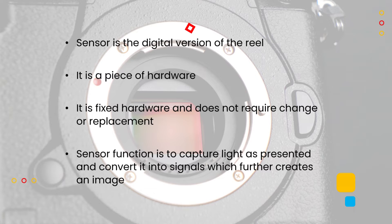It has multiple pixel-type sensors and their job is to capture light. As light reaches these small pixel-type sensors, they convert the light into signals and then further process them into an image. The image gets stored in the memory card or other storage device you have connected.